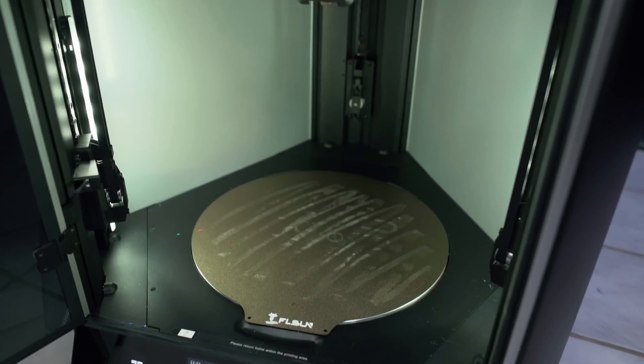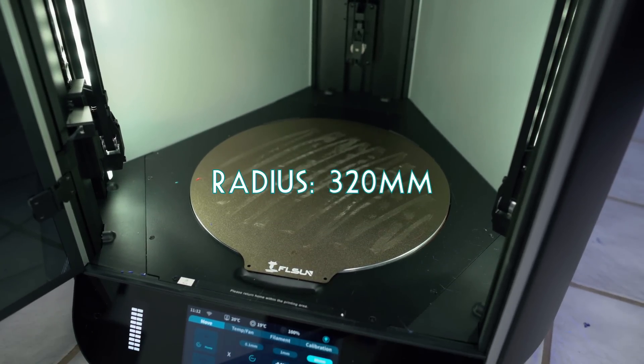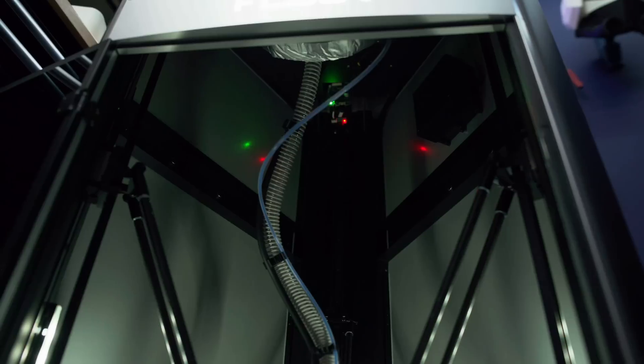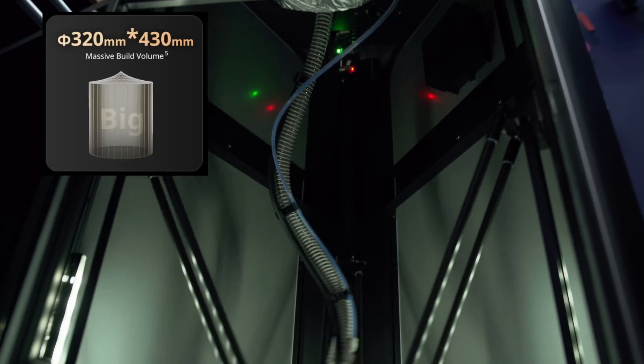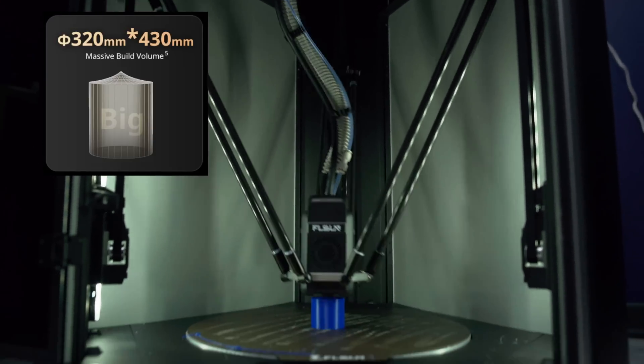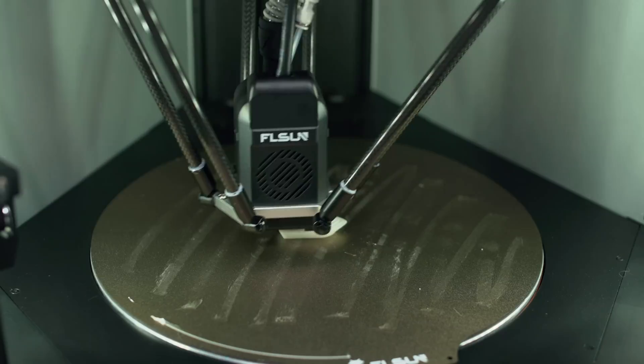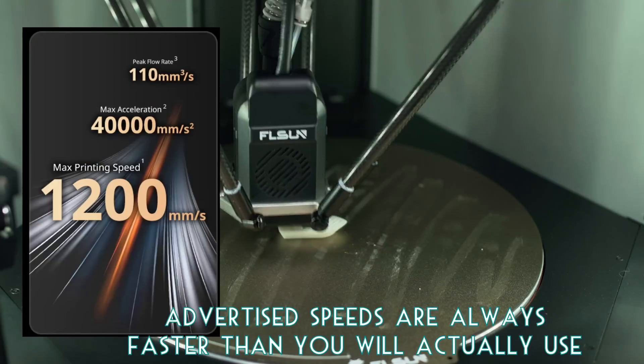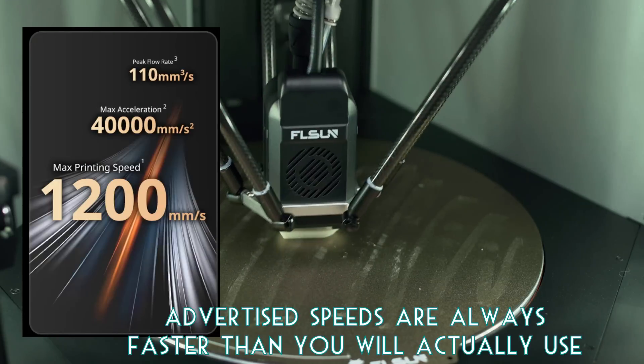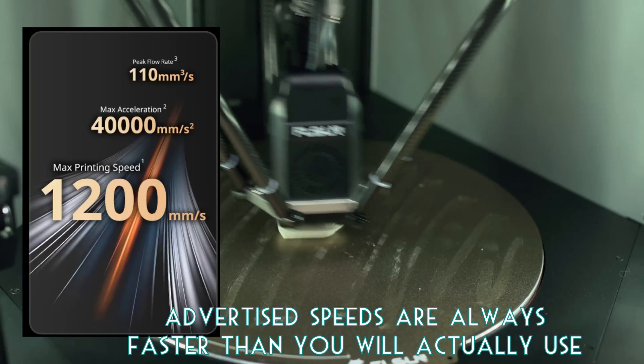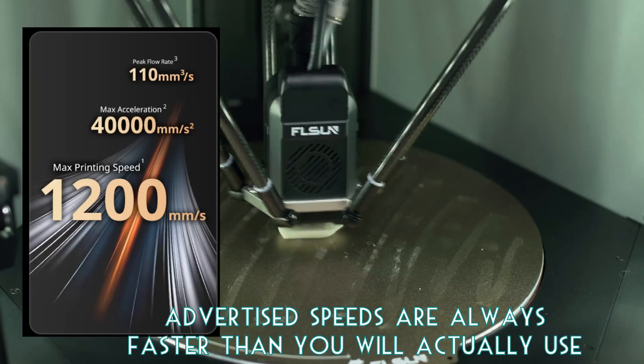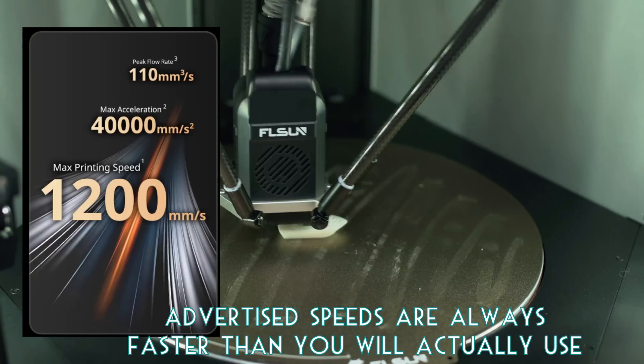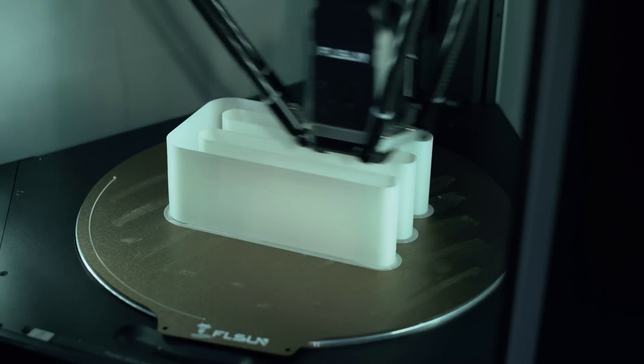Delta printers have a really unique build volume. It's got a radius of 320 millimeters by a height in the middle of 430. But it only goes up to that 340 millimeters in the very center. It's got a max speed of 1200 millimeters per second and maximum acceleration of 40,000 millimeters per second squared. They claim the maximum flow rate to be 110 millimeters cubed per second, but that's a little bit optimistic.